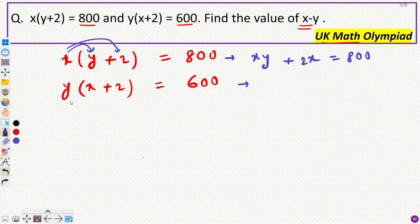Similarly for this, y into x or xy, both are same, so xy plus 2y equal to 600.